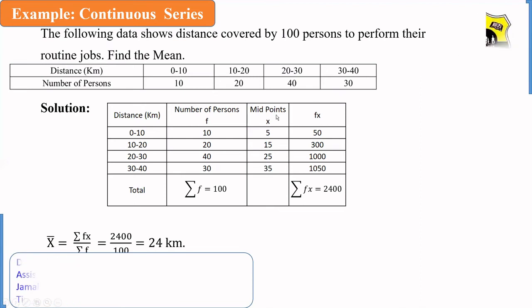The midpoint is x. The class interval 0 to 10, the mid value of the distance is 5. 10 to 20, the midpoint is 15. 20 to 30, the midpoint is 25. 30 to 40, the midpoint is 35.